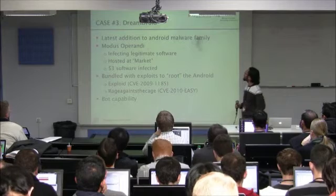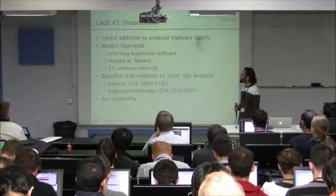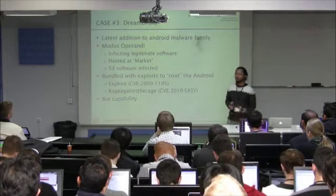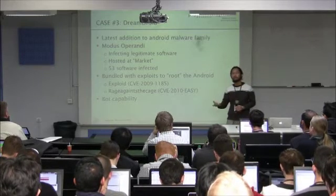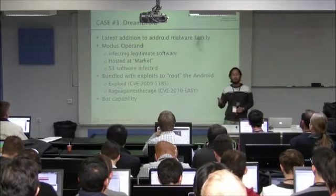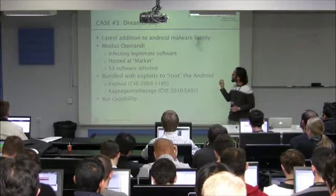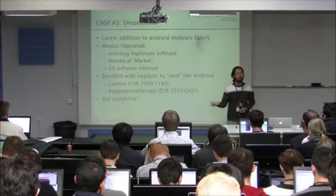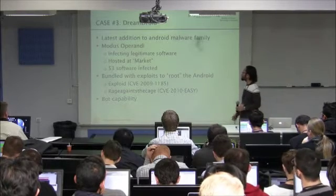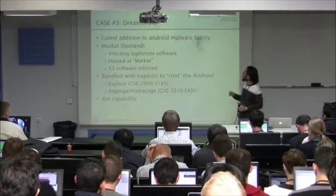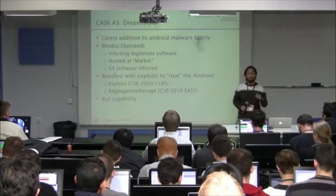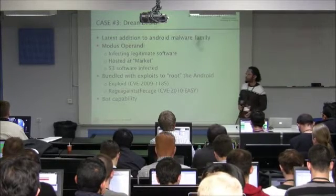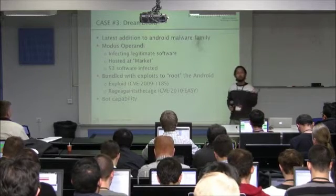We have another recent one: DreamDroid. It's the latest addition to the Android malware family, still infecting legitimate software. Nothing is trusted — even the official market. About 53 software titles were infected. After security researchers discovered it and Google managed to drop a couple of infected apps, within two days someone else registered with different developer names and put them up again. It's bundled with two exploits: CVE-2009-1185 to root the device, and another one against the kernel.